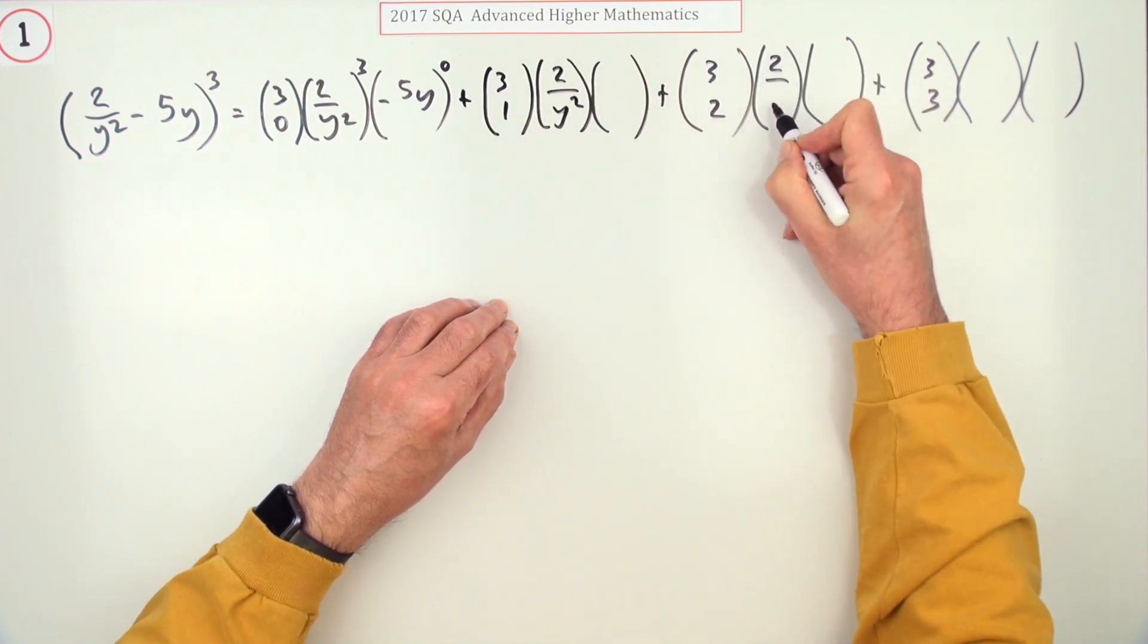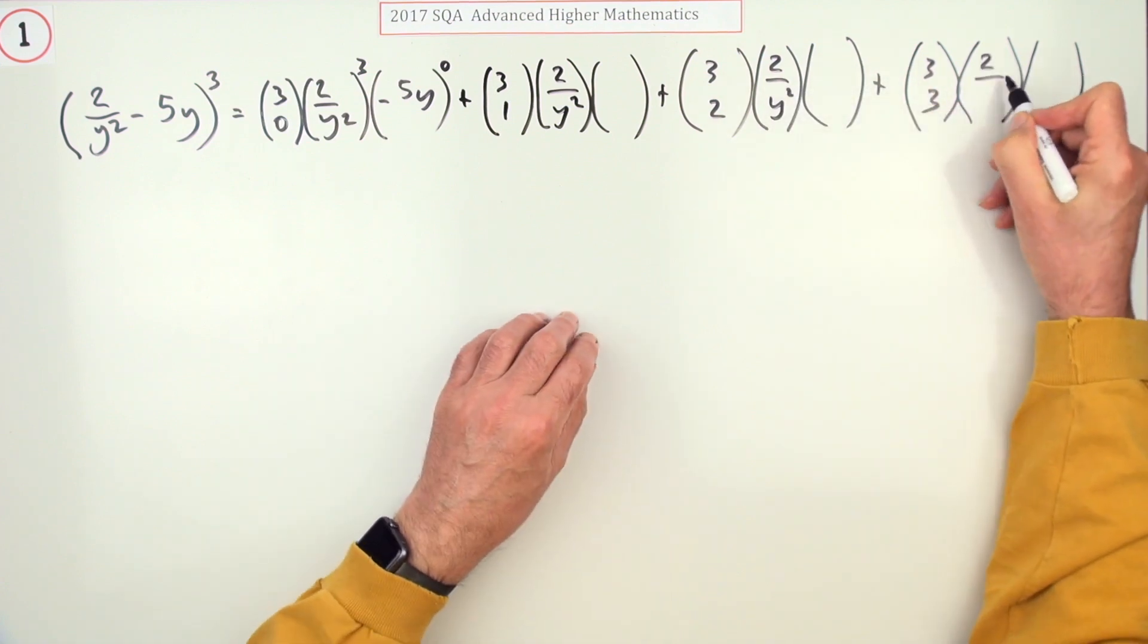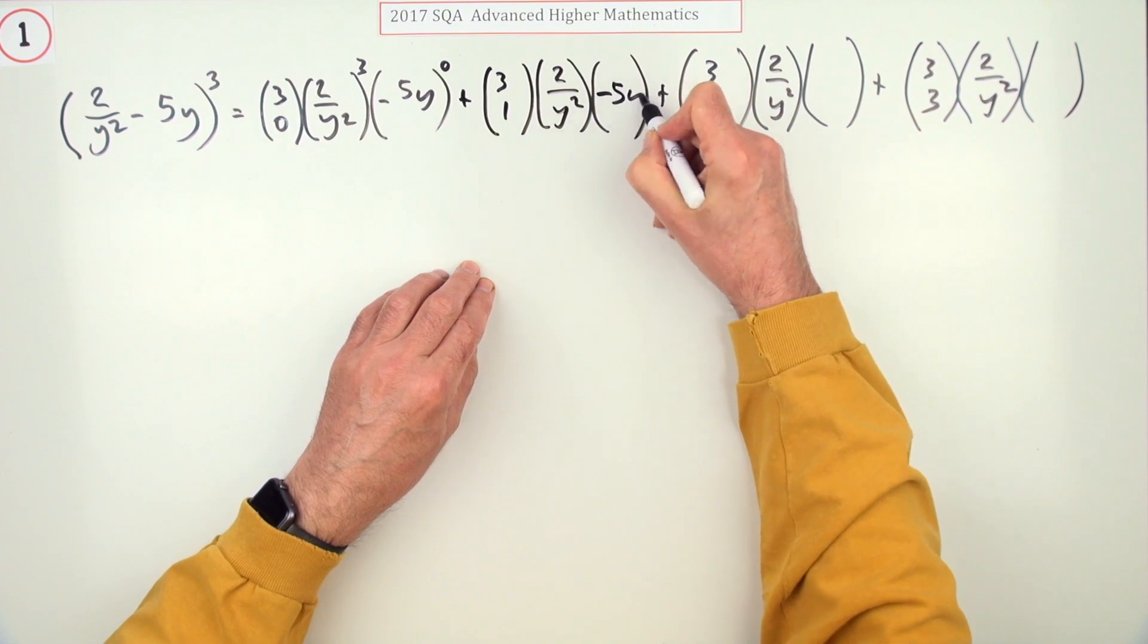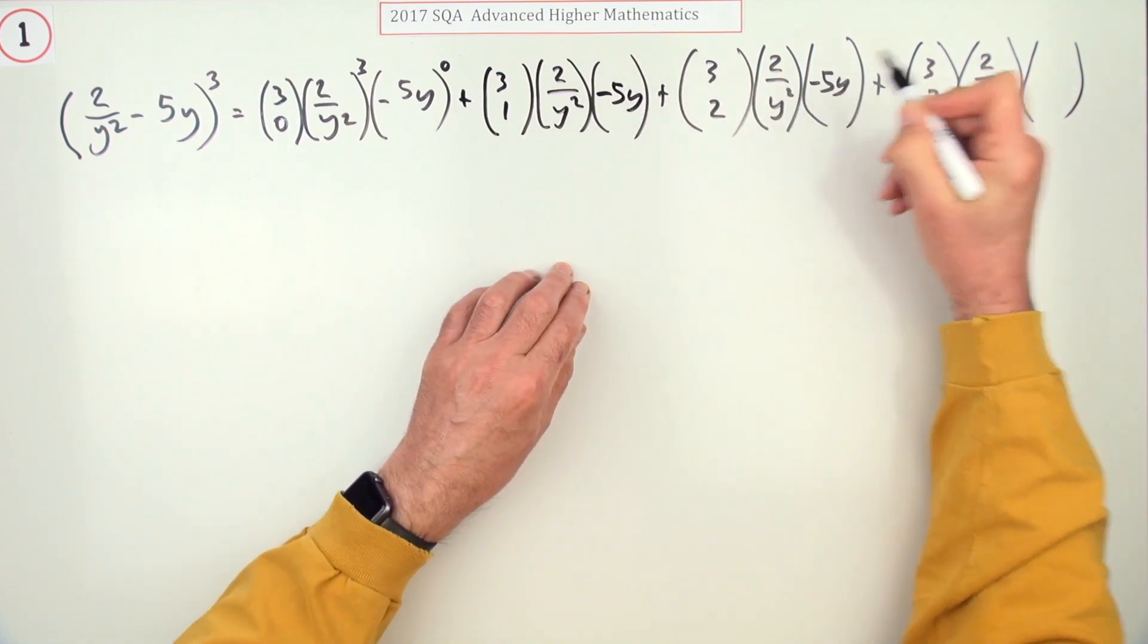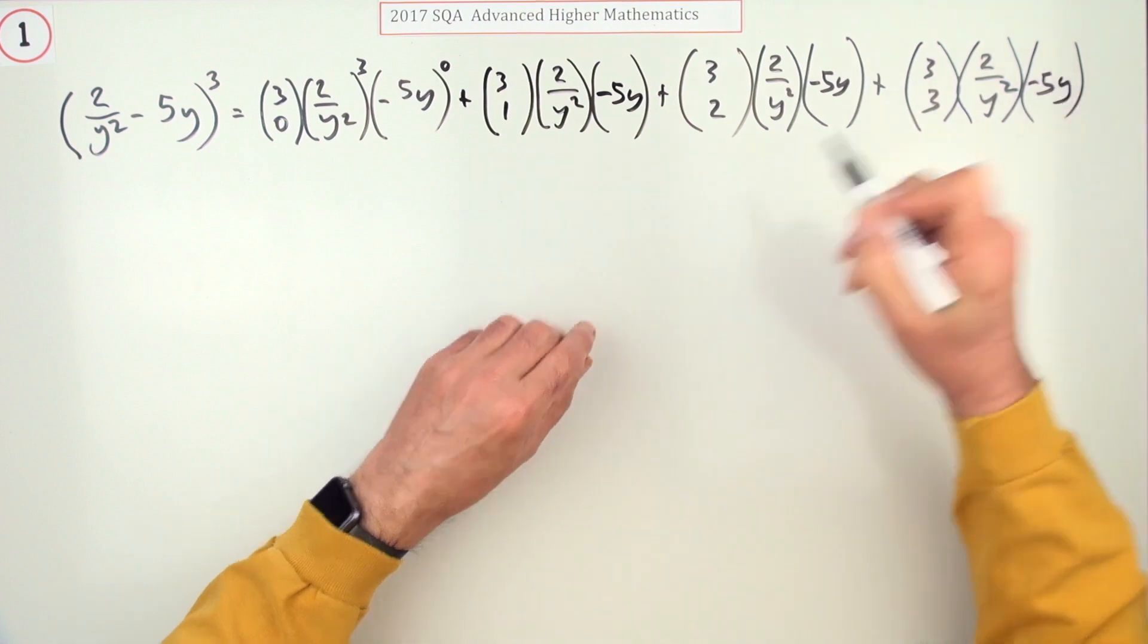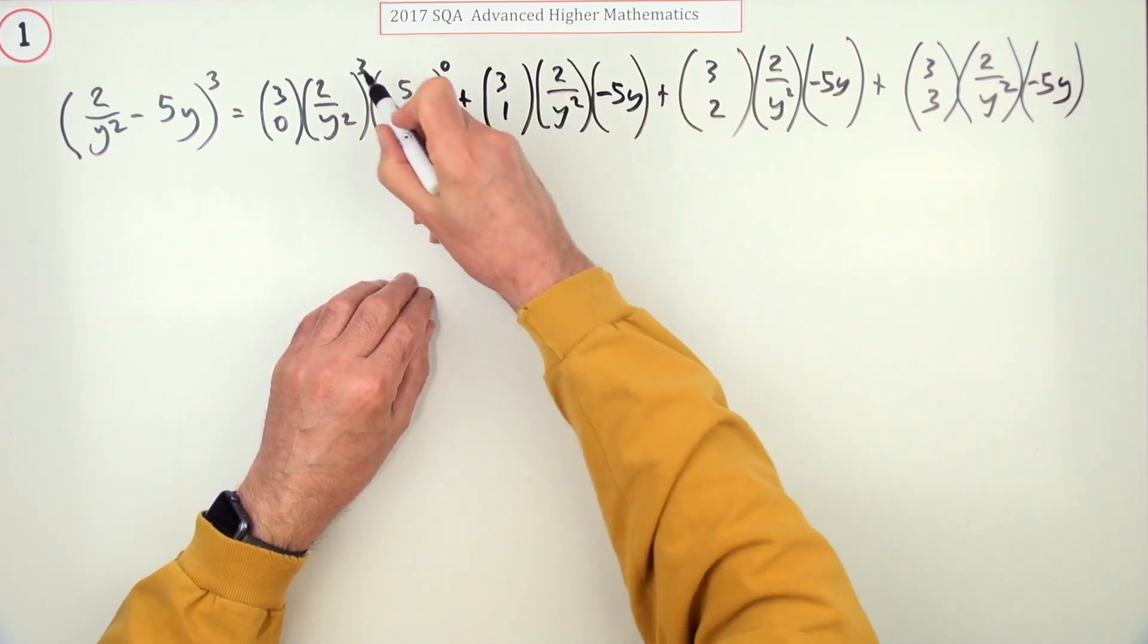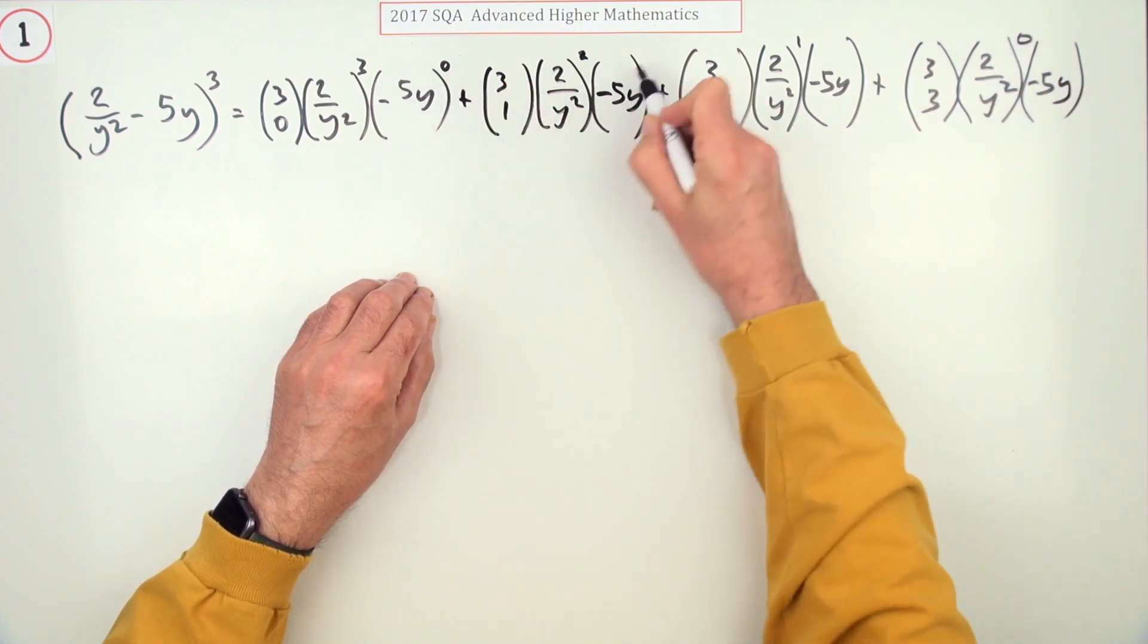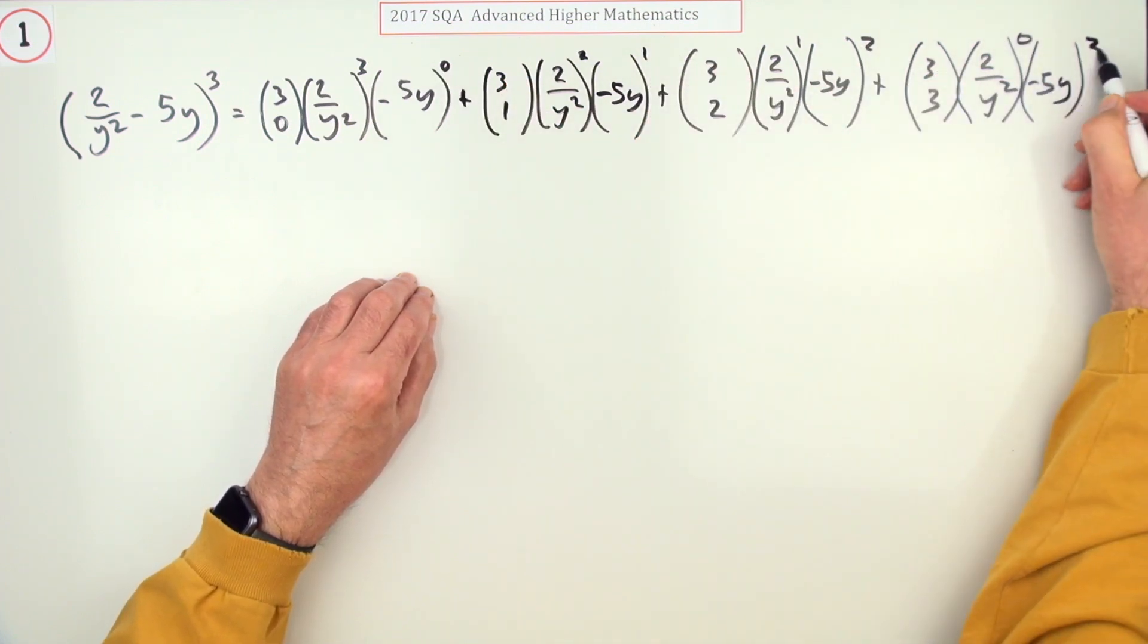There will be variation there—instead of x's, you're writing y. And the last one's negative 5y. And then the powers: three, two, one, zero; zero, one, two, three.